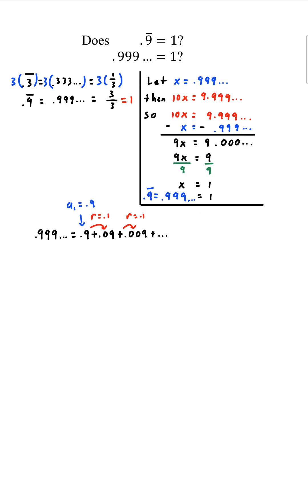And to get the next term, all we do is multiply by 0.1. This is known as an infinite geometric series.